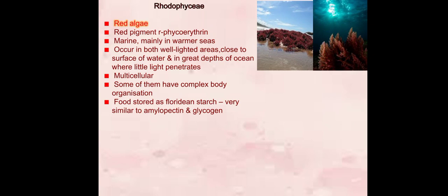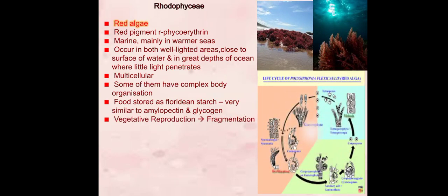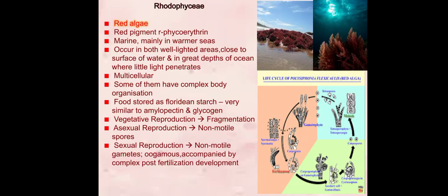This starch is very similar to amylopectin and glycogen found mainly in animal cells. Their vegetative reproduction is done by fragmentation. Asexual reproduction by non-motile spores and sexual reproduction by non-motile gametes, oogamous, accompanied by complex post-fertilization development. Some examples of Rhodophyceae or red algae are Polysiphonia, Porphyra, Gracilaria, Gelidium, etc.